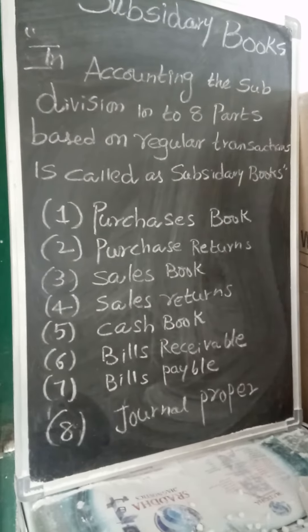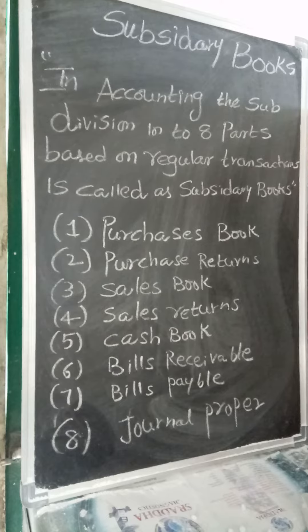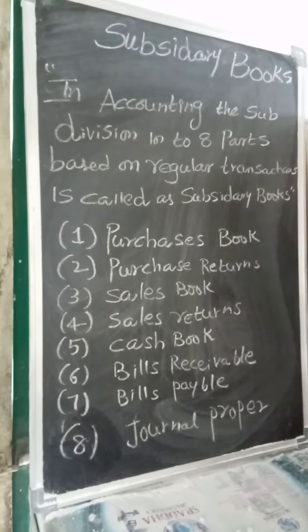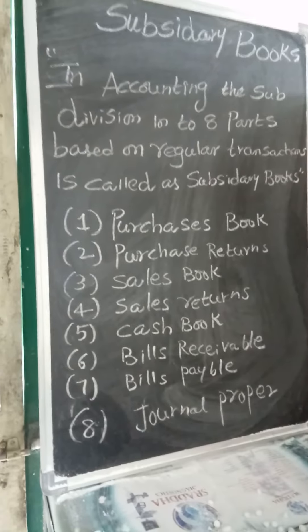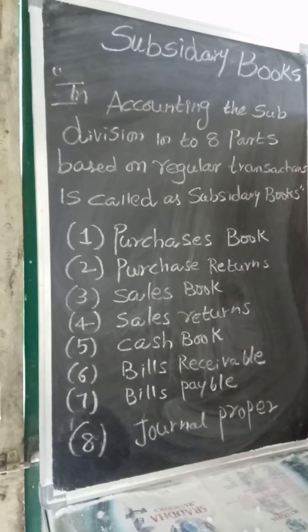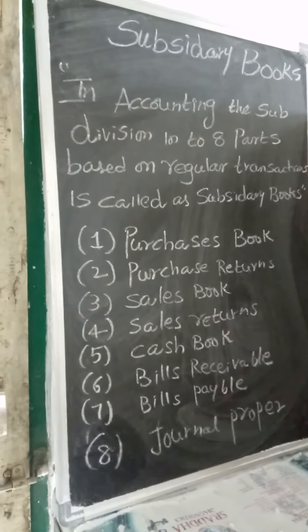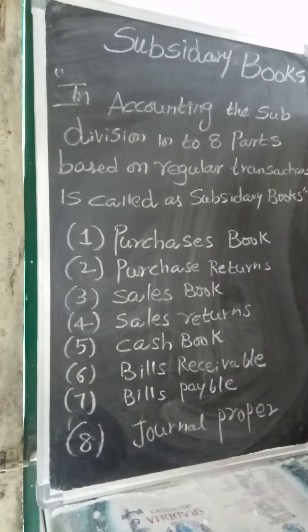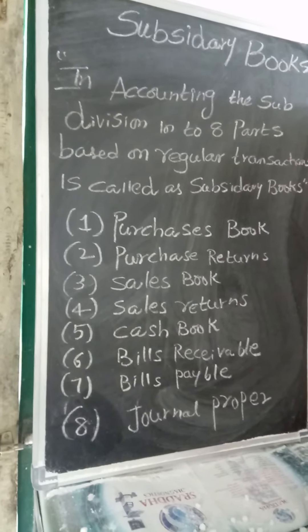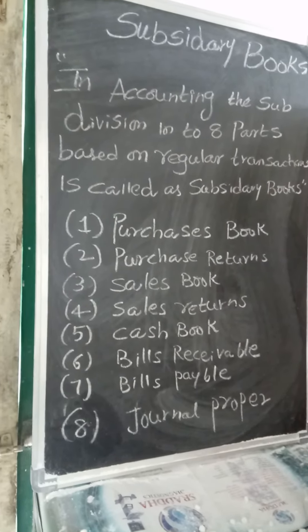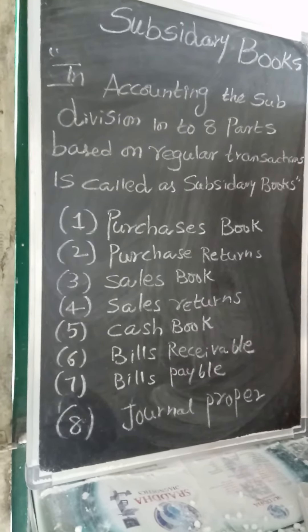Then bills receivable and bills payable. The debtors will give bills receivable, which will have due dates. To record those, we maintain the bills receivable book. We give bills payable to our creditors. To record those payment due dates, we prepare the bills payable book. Journal proper is used for any entry which is not recorded in the above books.